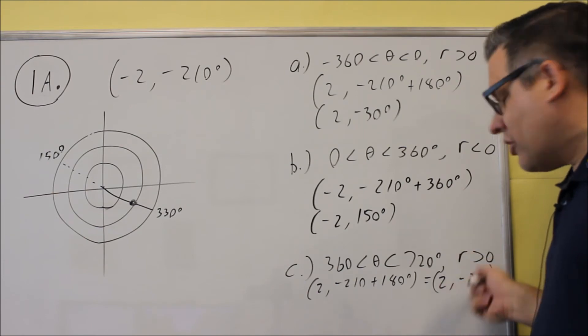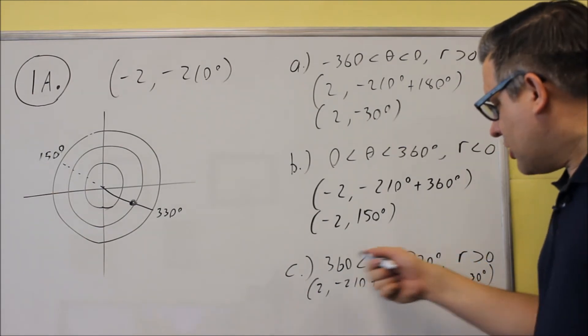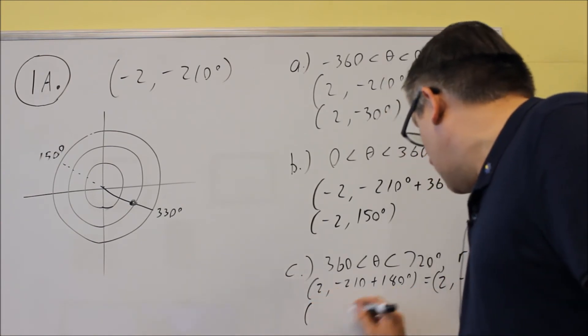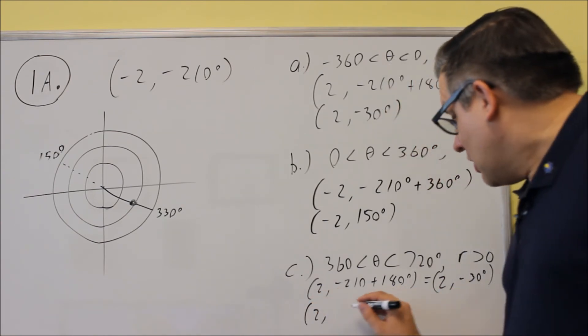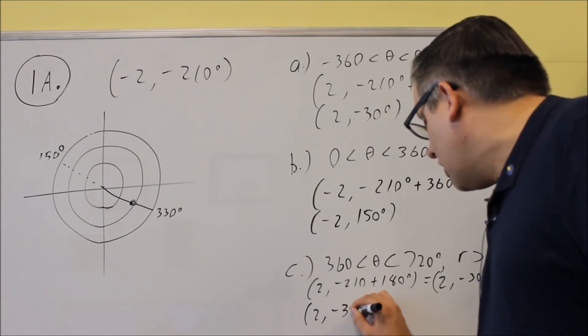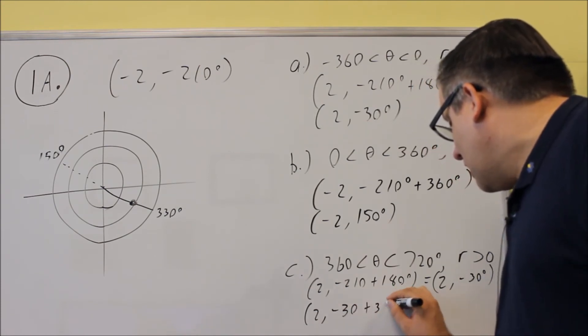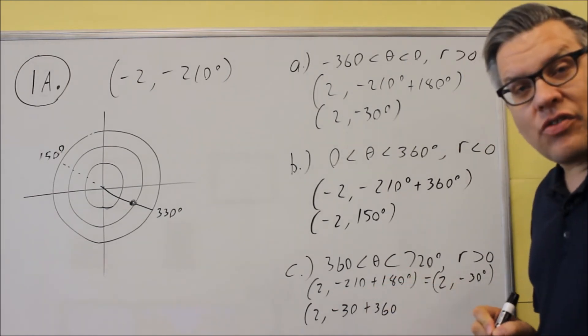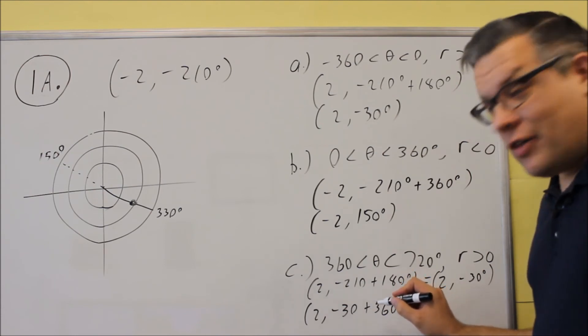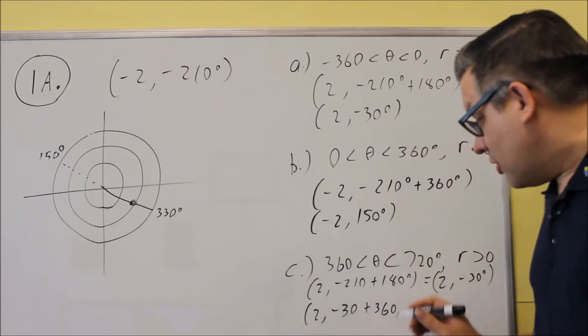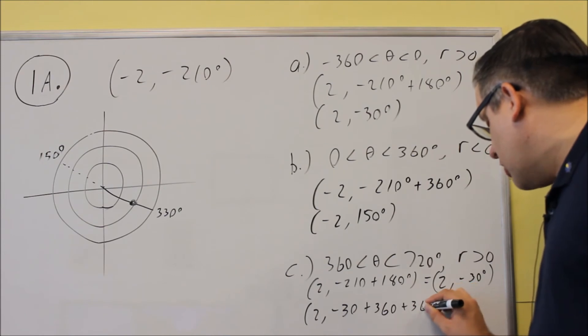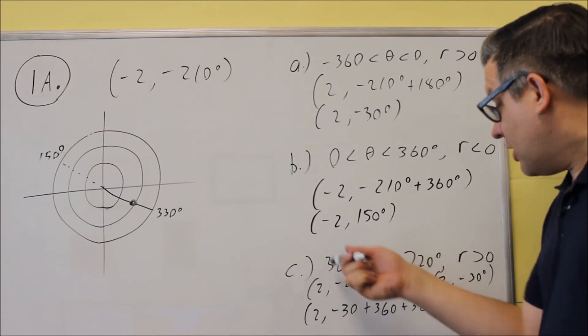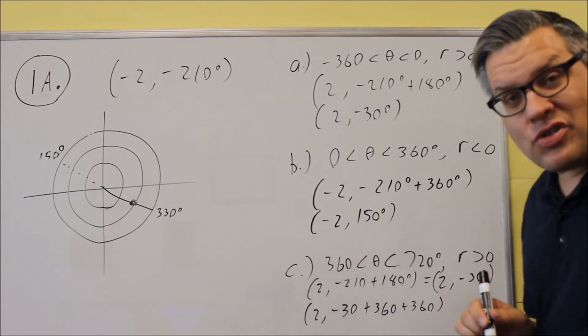Now the second step we have to do, this is still not the right answer because the angle has to be between 360 and 720. So what we're going to do is we're going to keep the R the same, we're going to keep it as 2, and then we're going to take negative 30 and we're going to add 360 to it. Now, if I add 360 to negative 30, that's actually not going to be enough, it's still going to be at 330. So I'm actually going to have to add another revolution to that as well. I've got to add two of them, two revolutions. Again, the reason why is because I want the angle to be between 360 and 720.